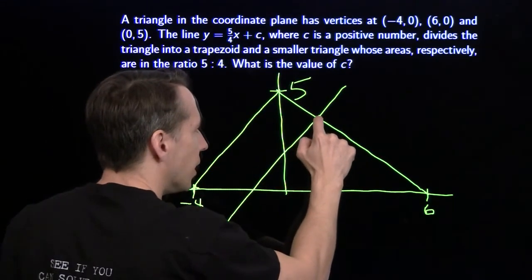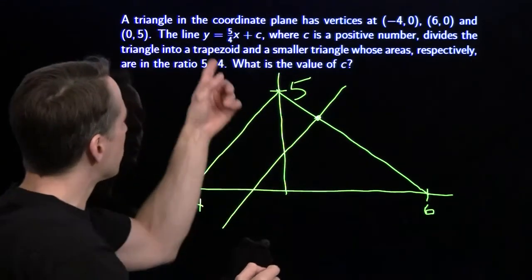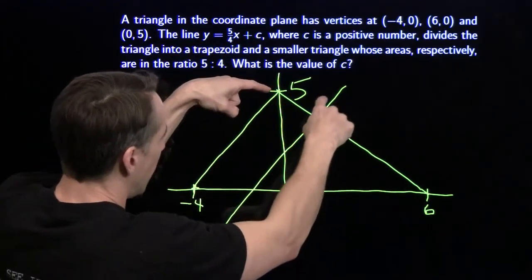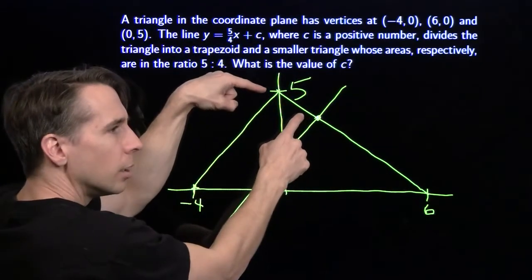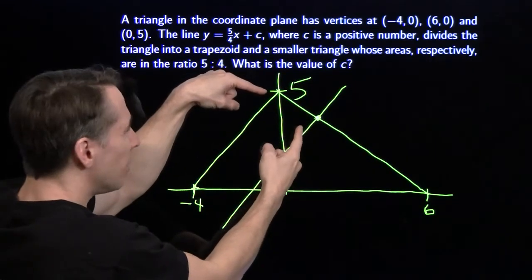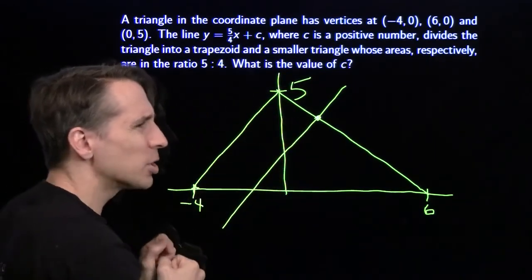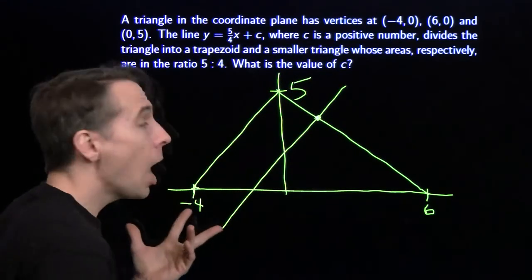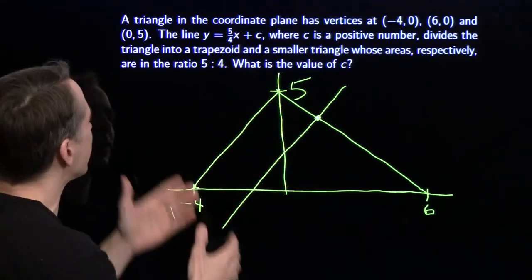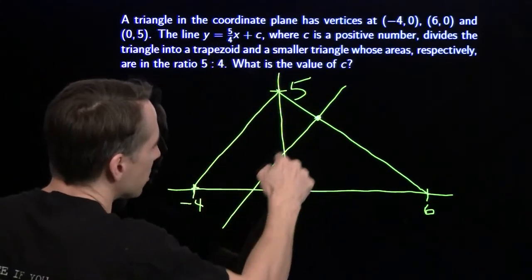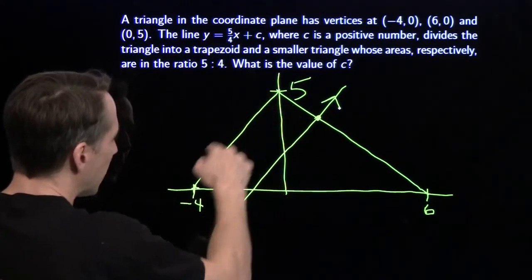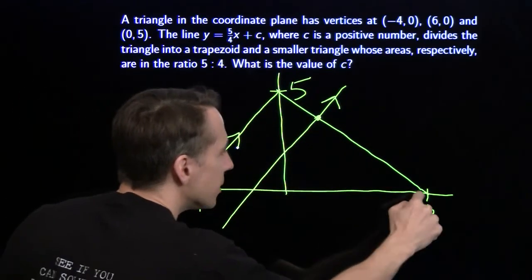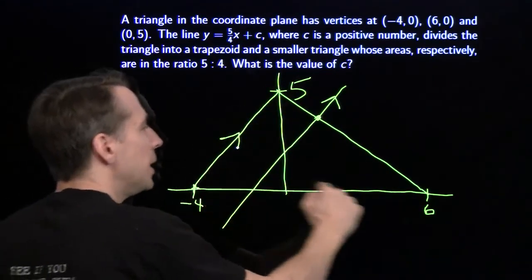So I could try to find this point in terms of c. I've got this equation here. I could find the equation of this line and find it. It's a waste of time. Don't do all the algebra. Do the geometry. What are you talking about? Similar to parallel lines? Oh, I've got parallel lines. It's a trapezoid. The slope here is 5 quarters. The slope here is 5 quarters. These two are parallel. This little triangle is similar to the big triangle.